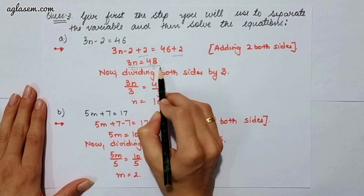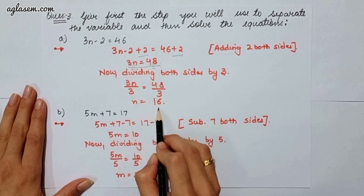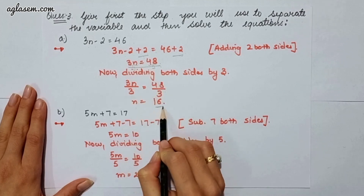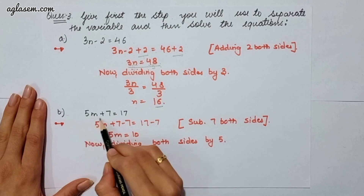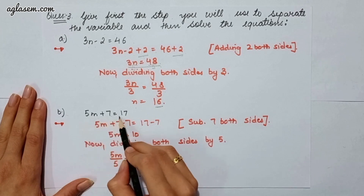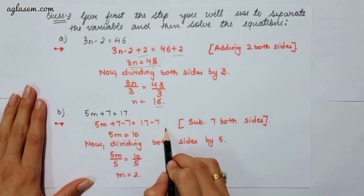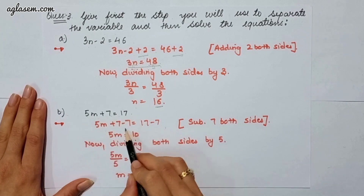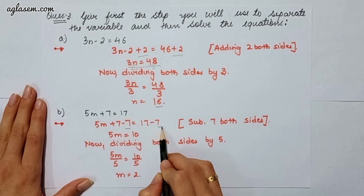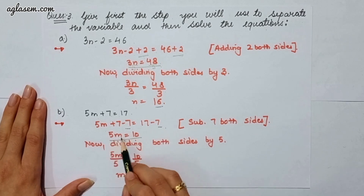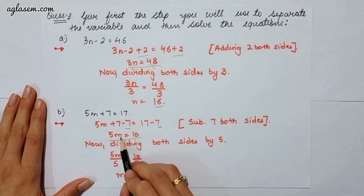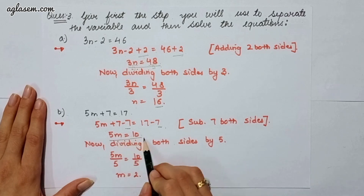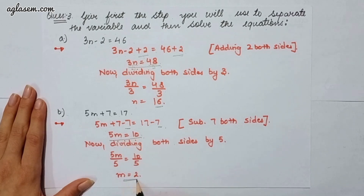Therefore n will be 16. The second part says 5m plus 7 is equal to 17. Here we have to subtract 7 on both sides, so the equation becomes 5m is equal to 10. Now we have to divide both sides by 5, therefore m will be 2.